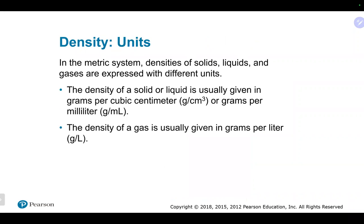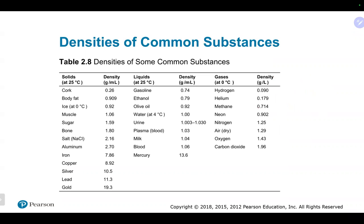For solids and liquids, density is typically expressed in grams per milliliter or grams per cubic centimeter. For gases — which we don't deal with much in this section — grams per liter is the typical unit. There's a table of common densities, and if you ever need the density of water, 1 gram per milliliter is the standard value used. Anything with higher density than water will sink.